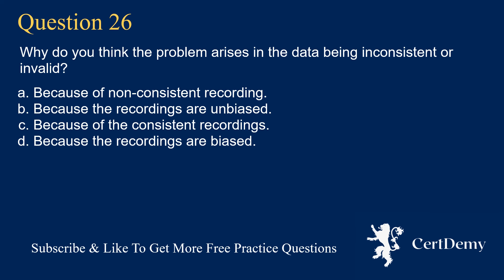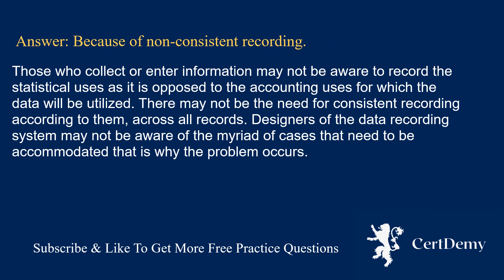Question 26. Why does the problem arise in data being inconsistent or invalid? Options: because of non-consistent recording; because the recordings are unbiased; because of consistent recordings; because the recordings are biased. The answer is: because of non-consistent recording. Those who collect or enter information may not be aware of the statistical uses, as opposed to the accounting uses for which data will be utilized. Designers of the data recording system may not be aware of the myriad of cases that need to be accommodated.